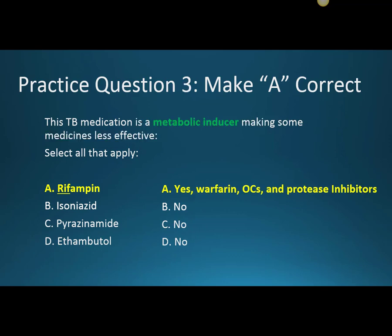Question three: this TB medication is a metabolic inducer, making some medicines less effective. A metabolic inhibitor slows the metabolism of a drug — when you slow the metabolism, you get more of the drug around. An inducer does the opposite: it speeds up metabolism, so there is less of the drug around. Rifampin has this interaction with warfarin, oral contraceptives, and protease inhibitors.